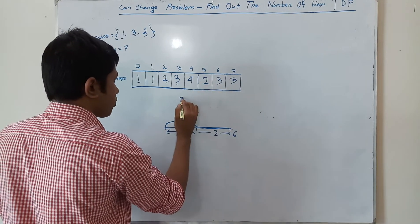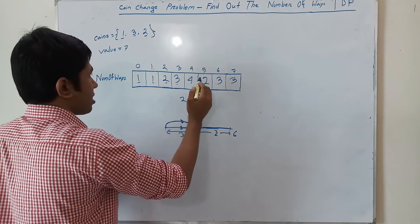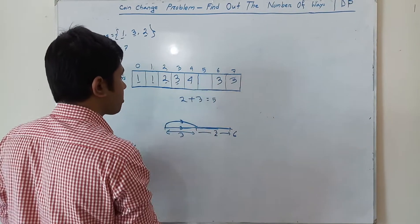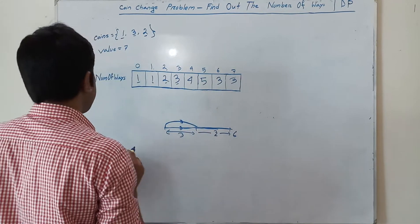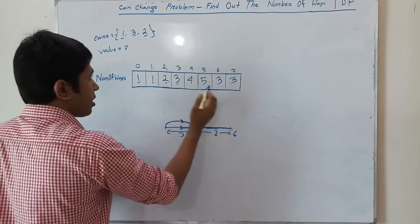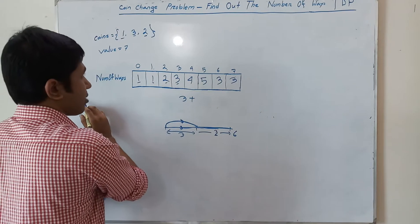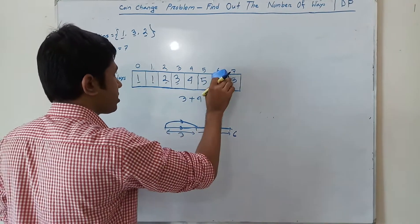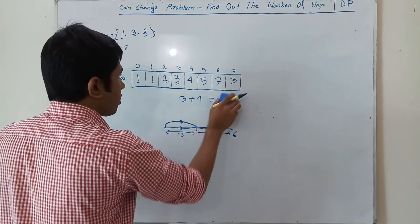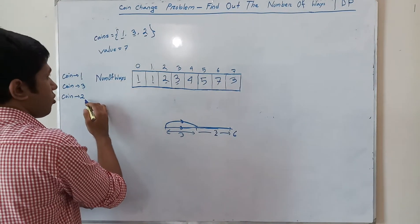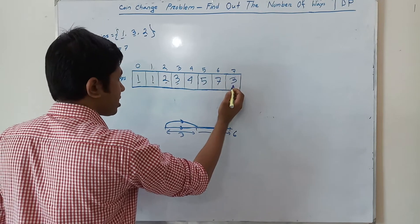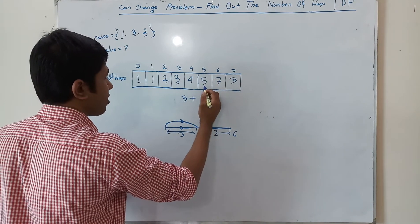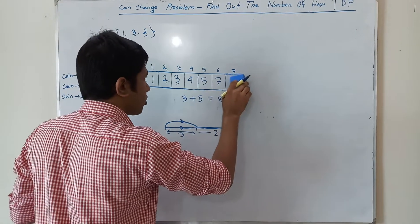For value 5, existing is 2, plus by using coin 2 the ways for 5 minus 2 equals 3, which is 3. Total is 5. When value is 6, existing is 3, plus ways for 6 minus 2 equals 4, which is 4. Total is 7. For our final value 7, using coins 1, 3, and 2, the existing number of ways is 3, plus ways for 7 minus 2 equals 5, which is 5. Total is 8. So the total number of ways is 8.